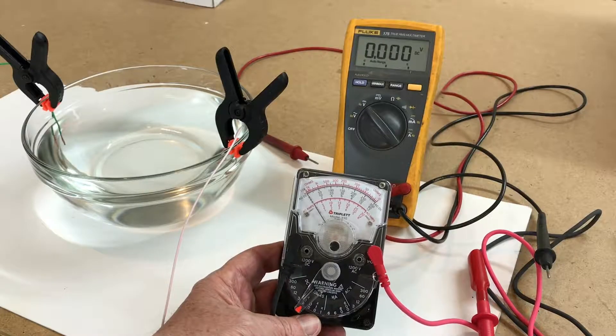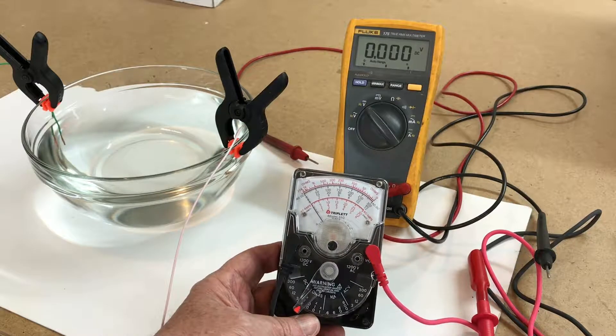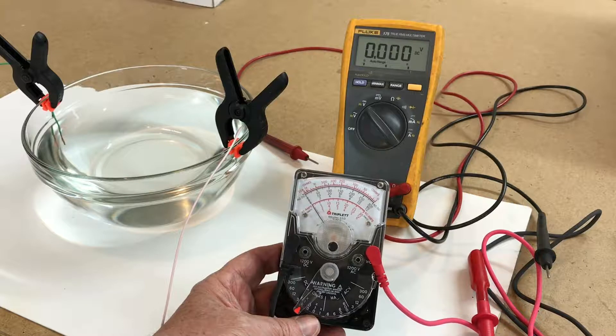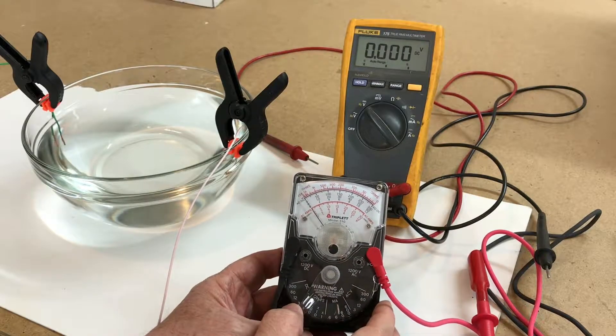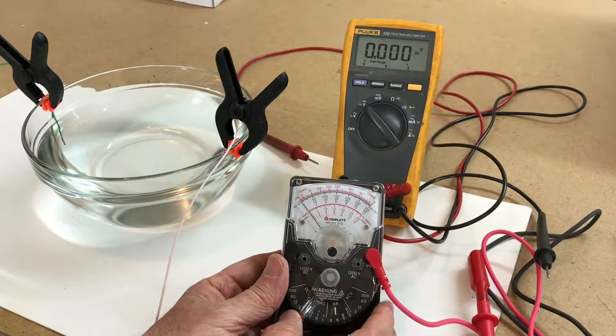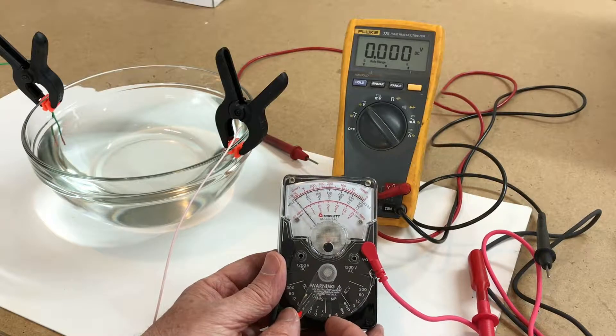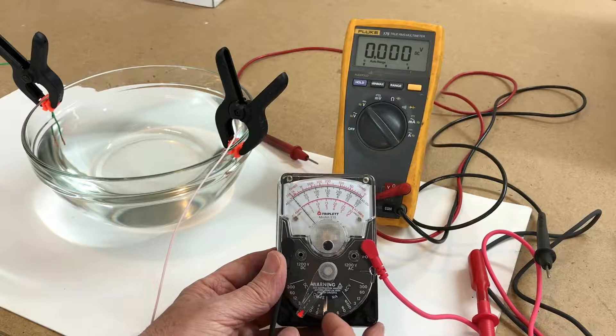In this video we're looking at the Triplet Model 310 multimeter voltmeter. The Triplet 310 is a great little meter that you can use for standard voltage readings, current draw, you can check continuity and DC voltage.